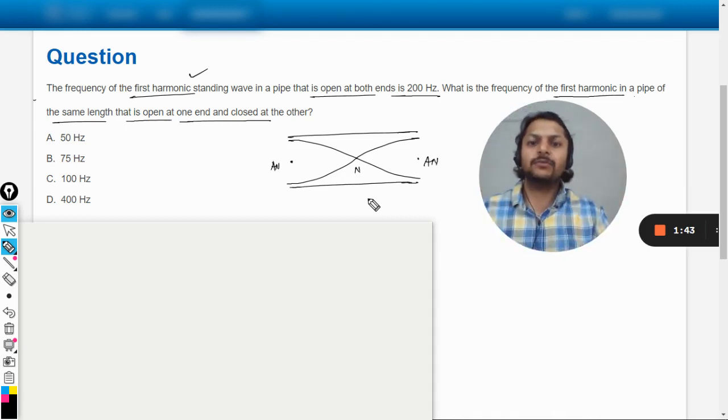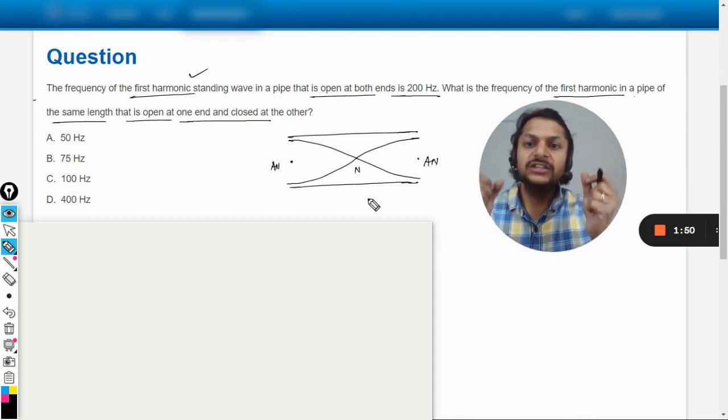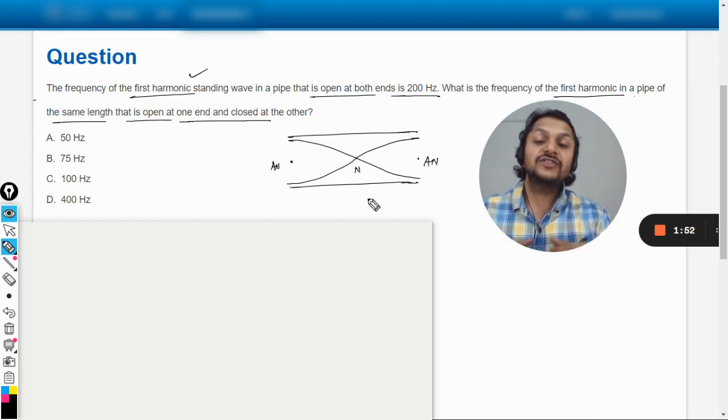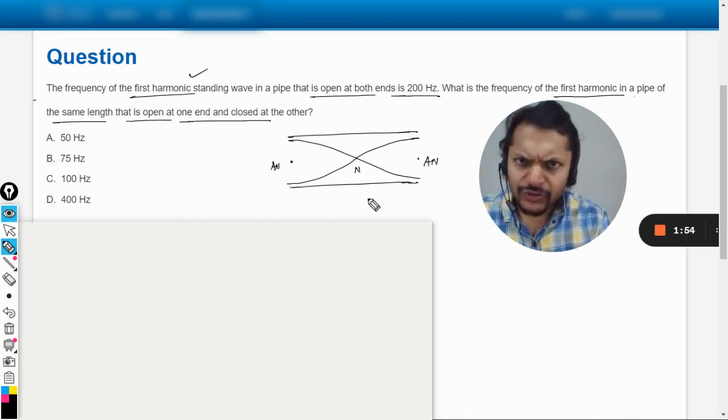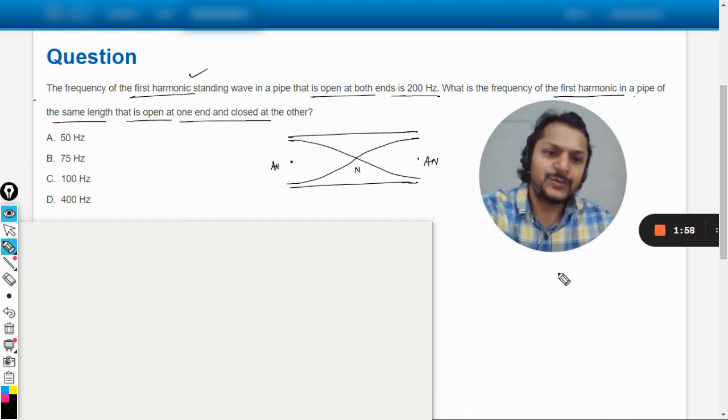So this is called the first harmonic when both ends are open and we are considering the organ pipe here, so we are considering the longitudinal waves here.